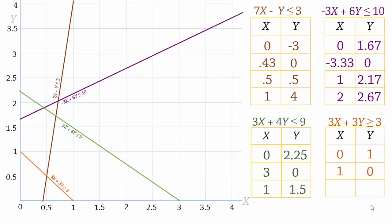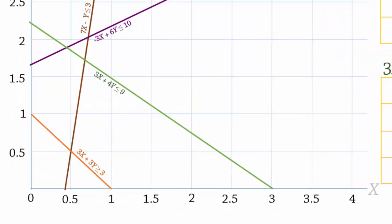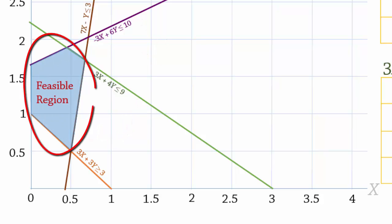Now, the first three constraints are less than constraints and are satisfied in the direction of the origin. The last constraint is a greater than constraint satisfied in this direction away from the origin. The directions of the arrows show that the feasible region is this shaded area in blue.